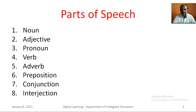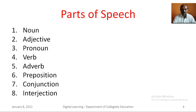Words are divided into different classes called parts of speech according to their use — that is, according to the work they do in a sentence. As words are divided into different classes according to the work they do in sentences, we cannot say to which part of speech a word belongs unless we see it used in a sentence. The parts of speech are eight in number.